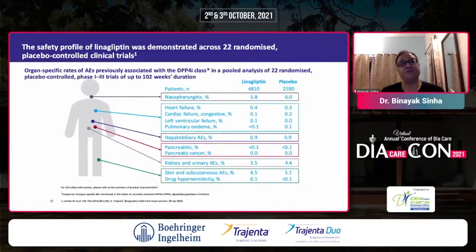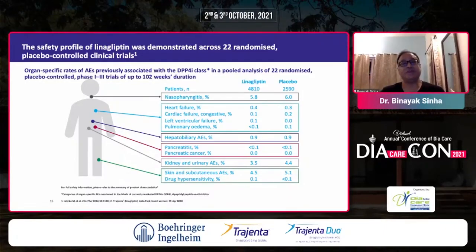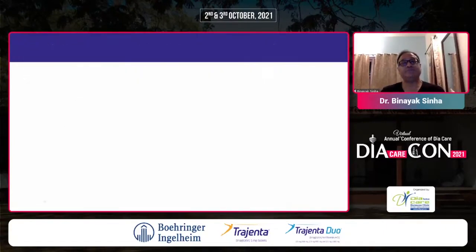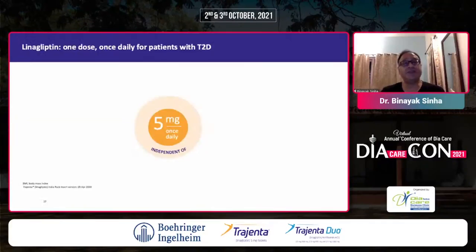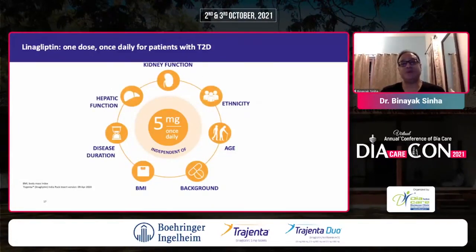It is extremely well tolerated — the risks are minimal, essentially at placebo level. This drug is often described as a 'fill it, shut it, and forget it' kind of drug. It is a 5 mg, once-daily, small pill that you can use across a spectrum of disease, age, background, BMI, disease duration, hepatic function, renal function, and ethnicity.